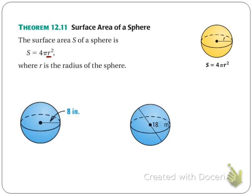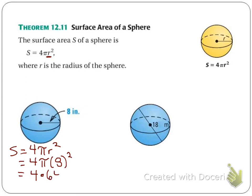Let's look at two examples. First, with a radius of 8 inches: the formula is 4πr², which gives 4π times 8 squared, which is 4 times 64π, giving us 256π inches squared.